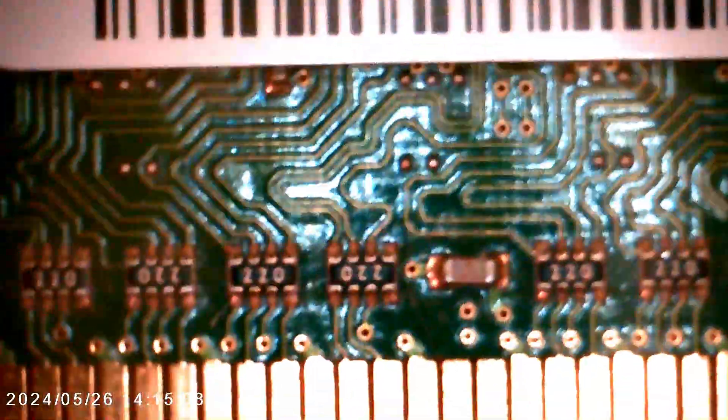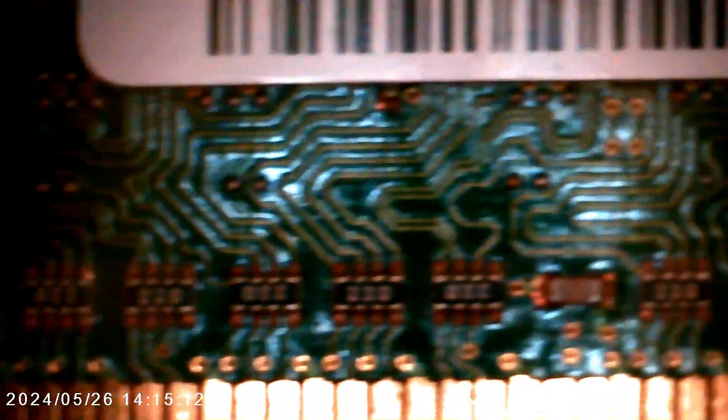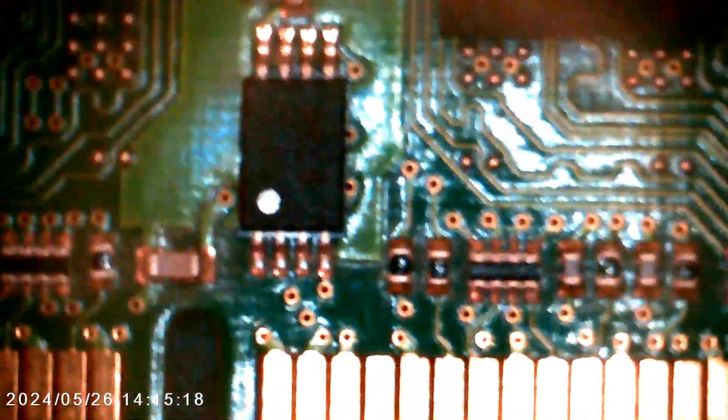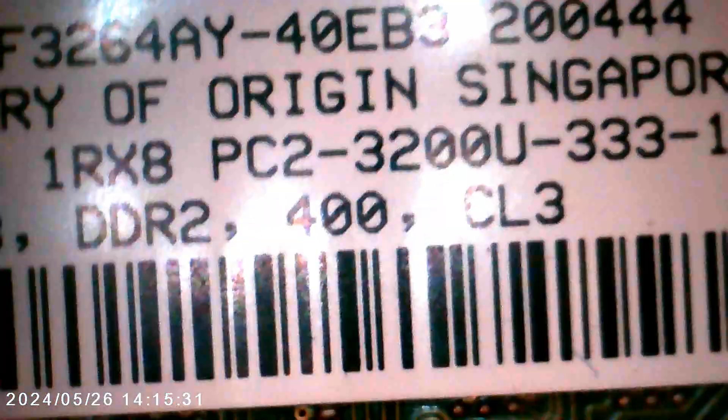And here is a stick of RAM. An old 256 megabyte DDR2 chip. You can clearly see all of the traces on the circuit board and the components as well as the connector edge. Right there. There's some of the chips that are on it. Other solder pads and label.